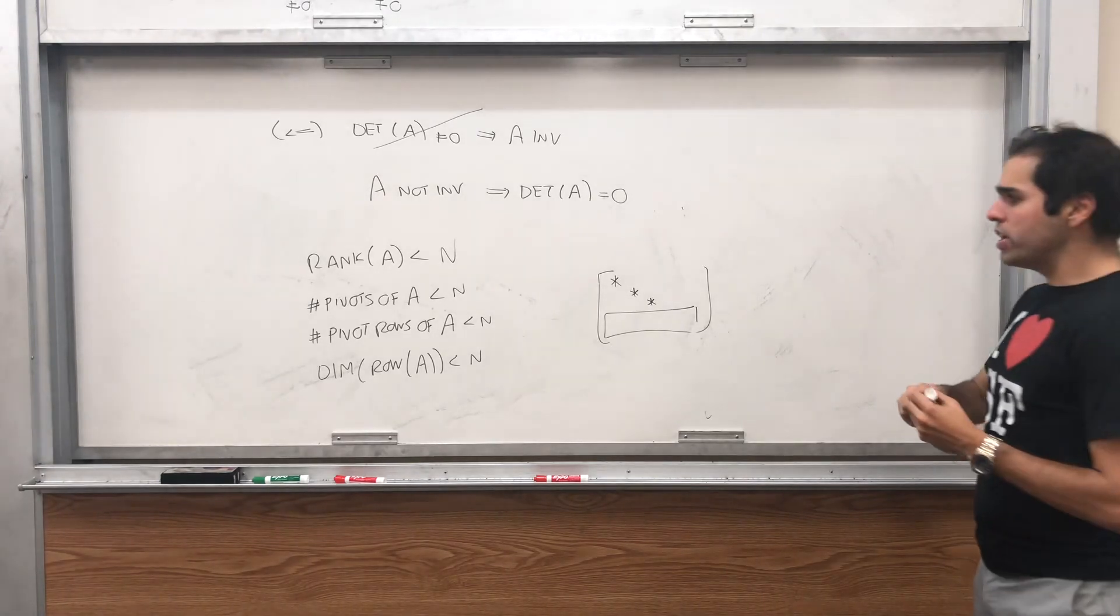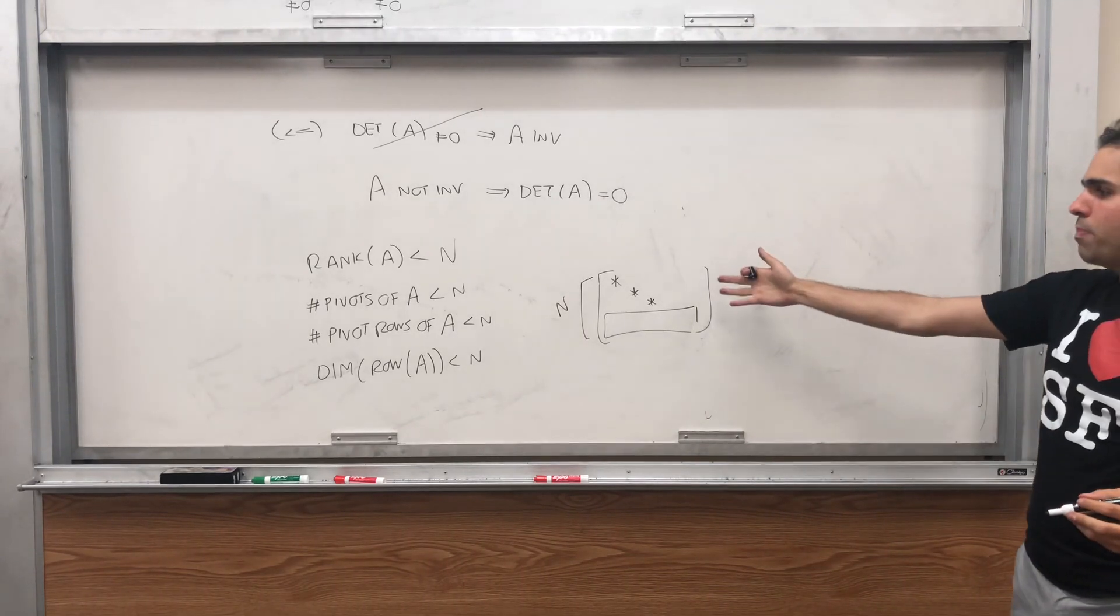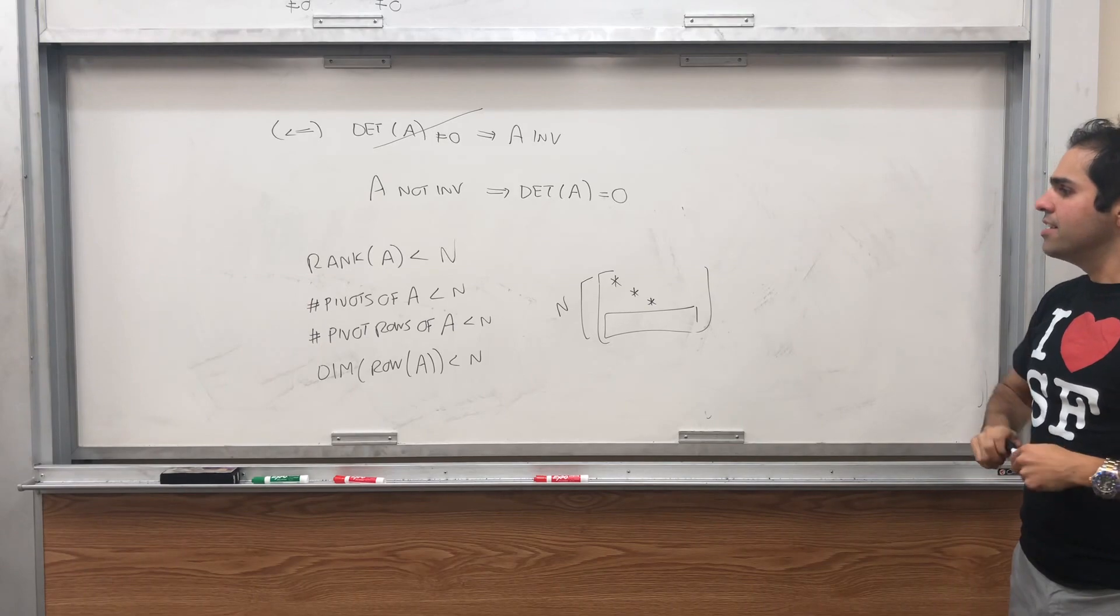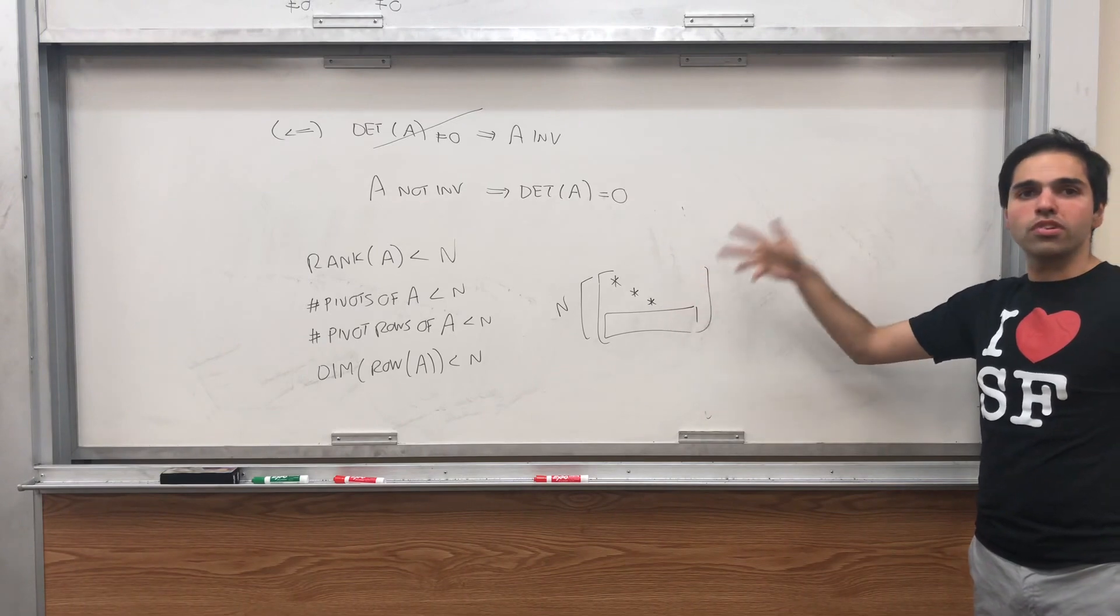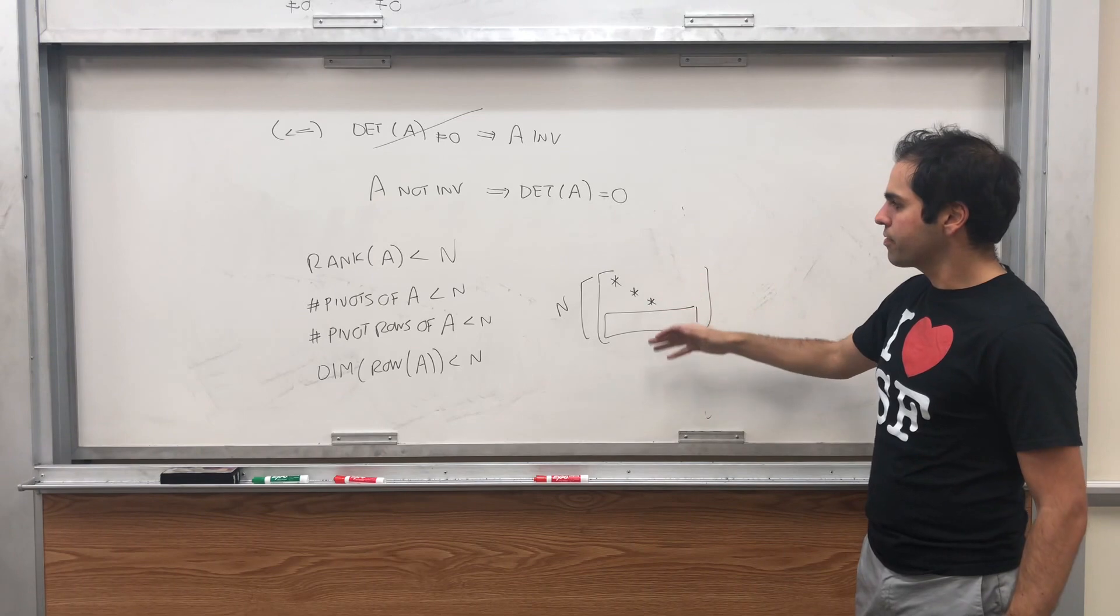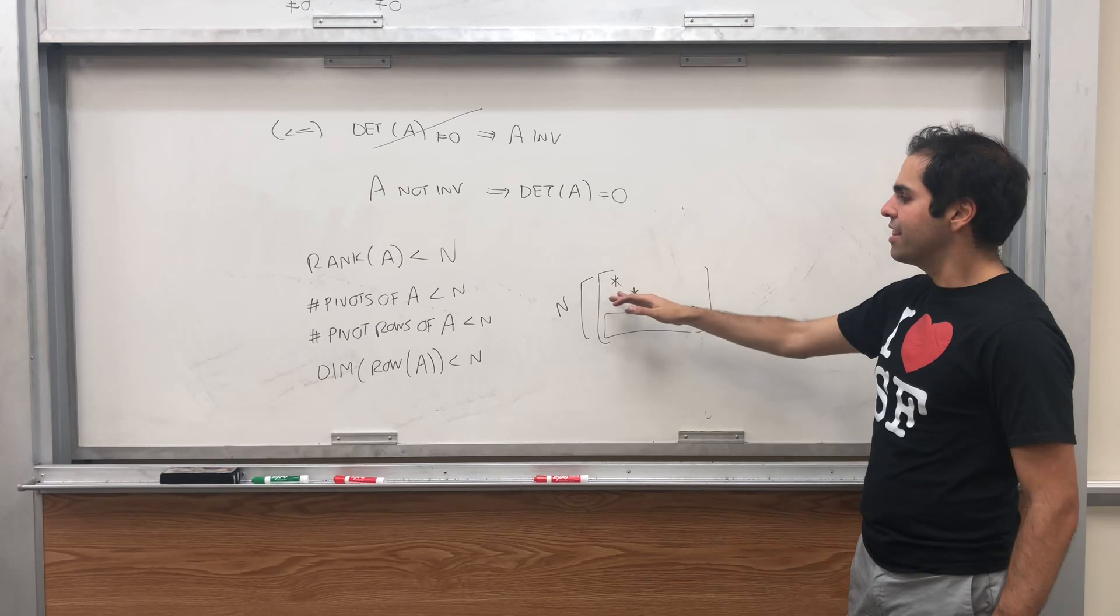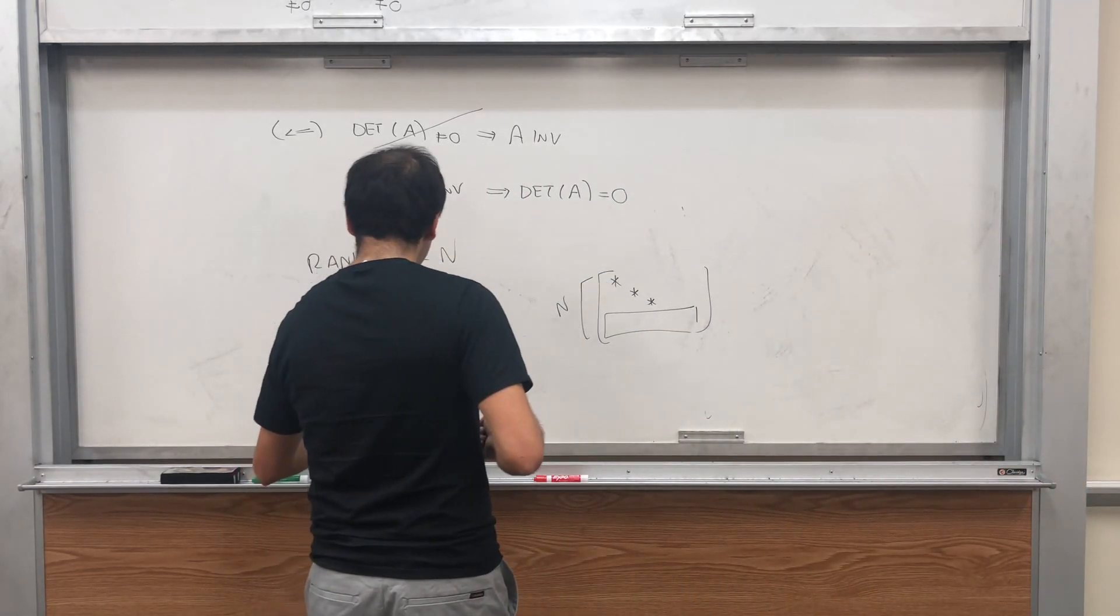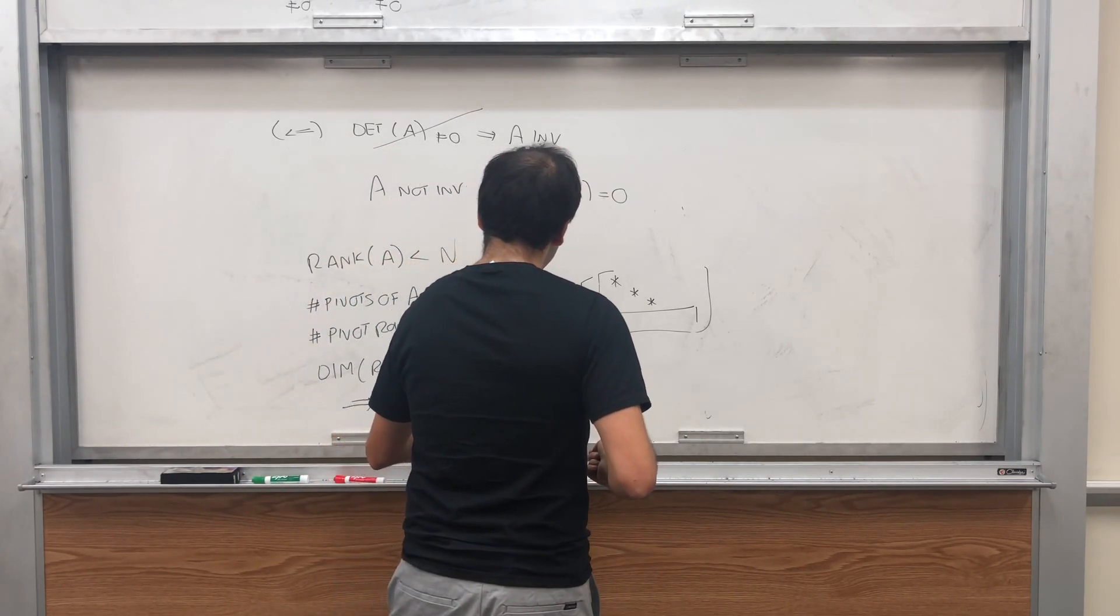So look, what we have here, we have N rows. And the span of the rows is strictly less than the dimension of R^N. So in particular, what I'm trying to get at, it follows then that the rows are linearly dependent. We cannot have that they're all linearly independent, because otherwise it would also imply that there's a pivot in every row.